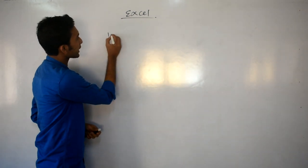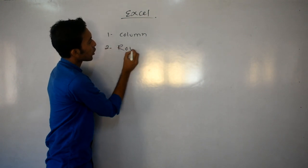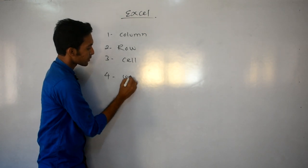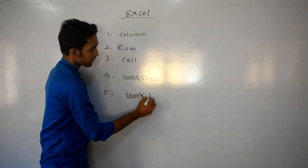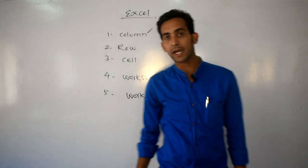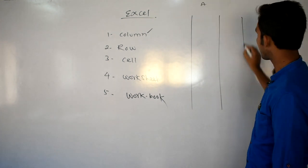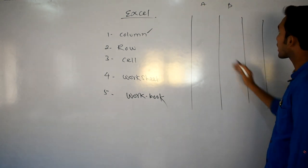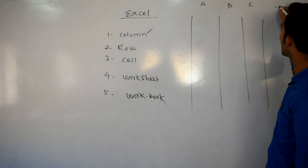First of all, in Excel we will see: the first thing is column, second is row, third is cell, fourth is worksheet, and fifth is workbook. Column is a vertical line from top to bottom, which is represented by alphabets A, B, C and so on.